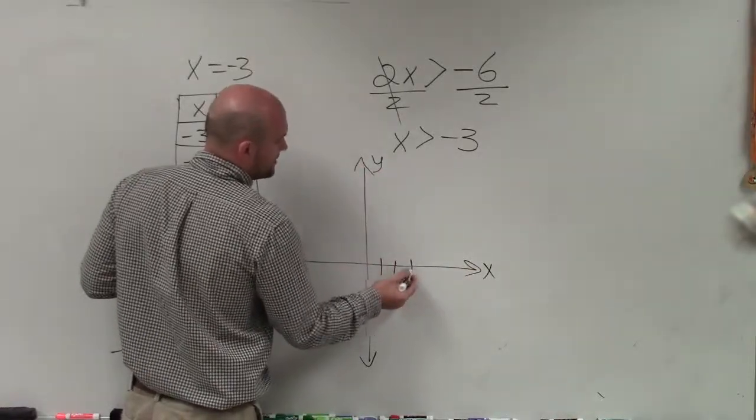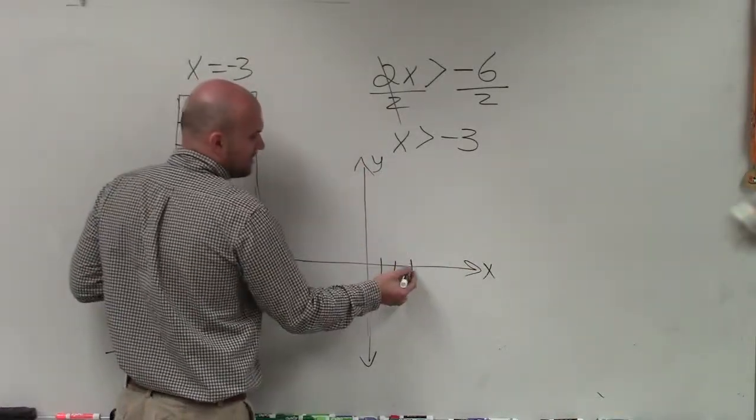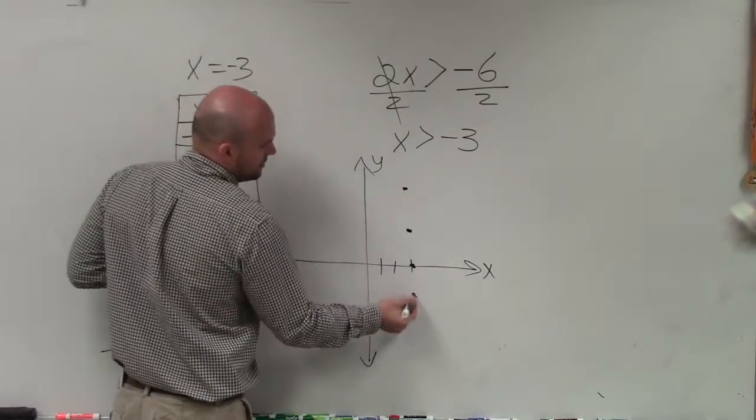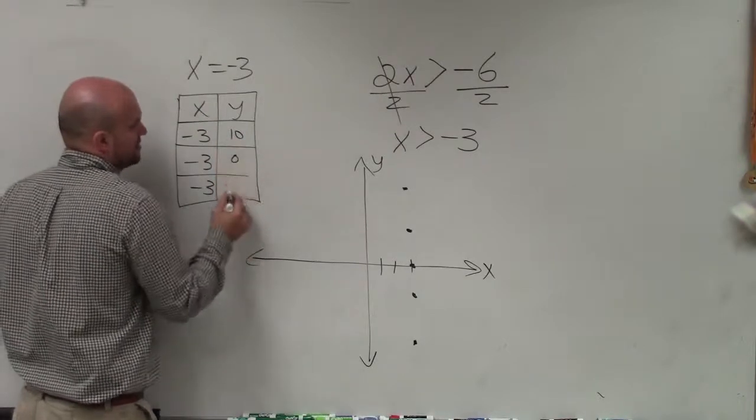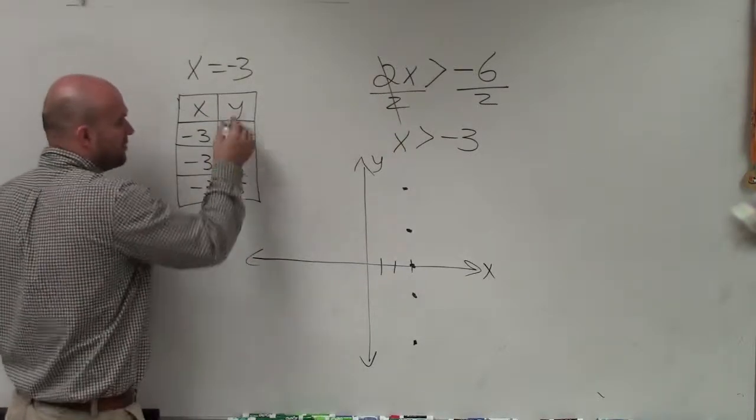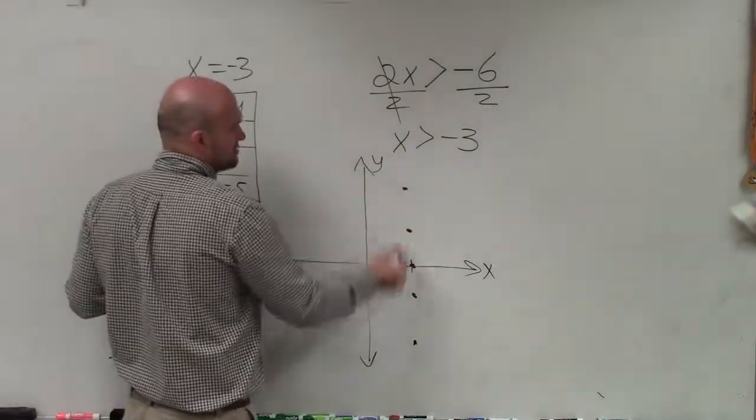So 1, 2, 3. So it doesn't matter what value for y I pick. x is always going to equal 3. So therefore, it doesn't matter. I could do 10, I could do 0, I could do negative 5. No matter what values I pick for y, x always equals negative 3.